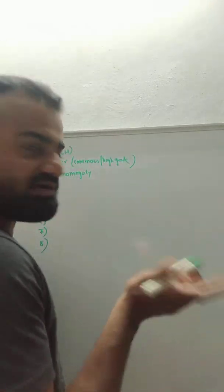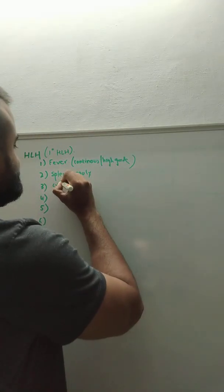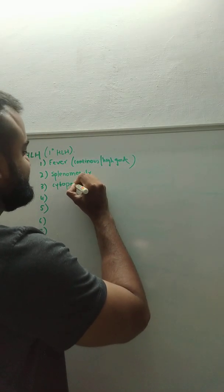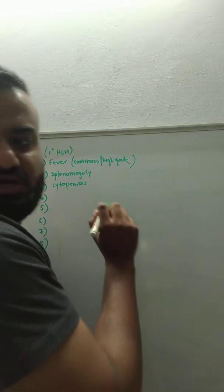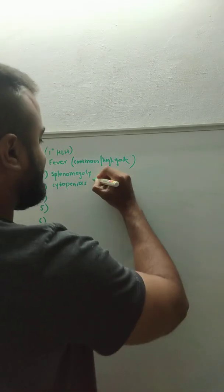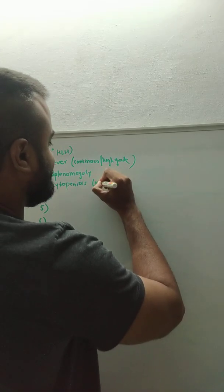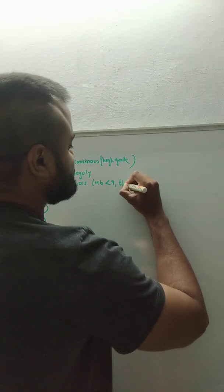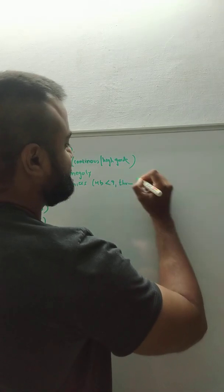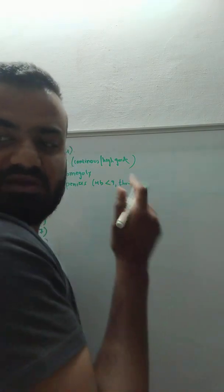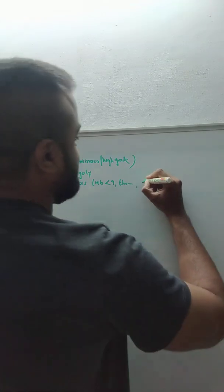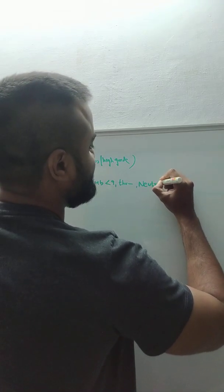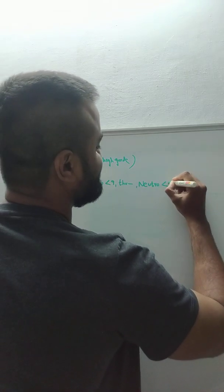The next criterion is the presence of cytopenias. Cytopenias include hemoglobin less than 9, thrombocytopenia, or neutropenia with neutrophils less than 1000.